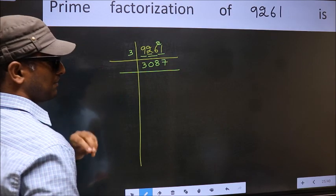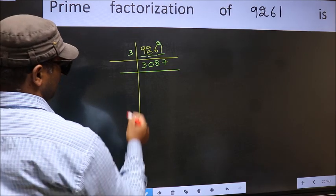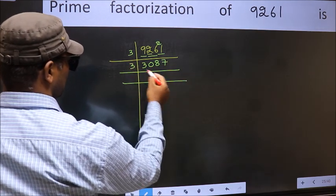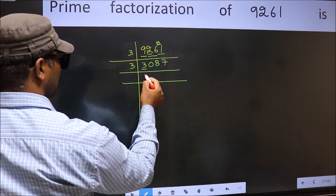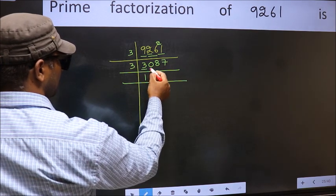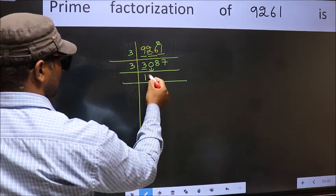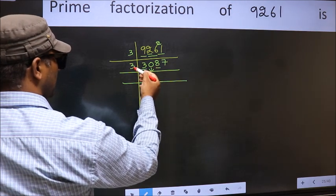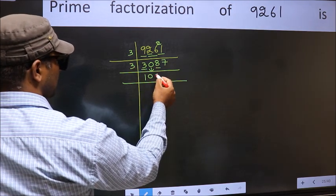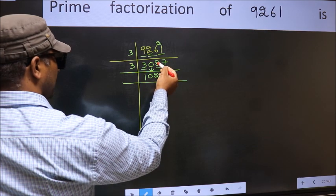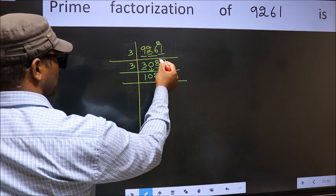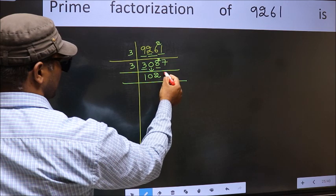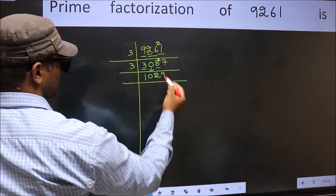So this number is also divisible by 3. Take 3 again. First number is 3 — when do we get 3 in the 3 table? 3 times 1 is 3. Bring the 0 down. The other number is 8 — a number close to 8 in the 3 table is 3 times 2 = 6. 8 minus 6 is 2, carry forward: 27. When do we get 27 in the 3 table? 3 times 9 is 27.